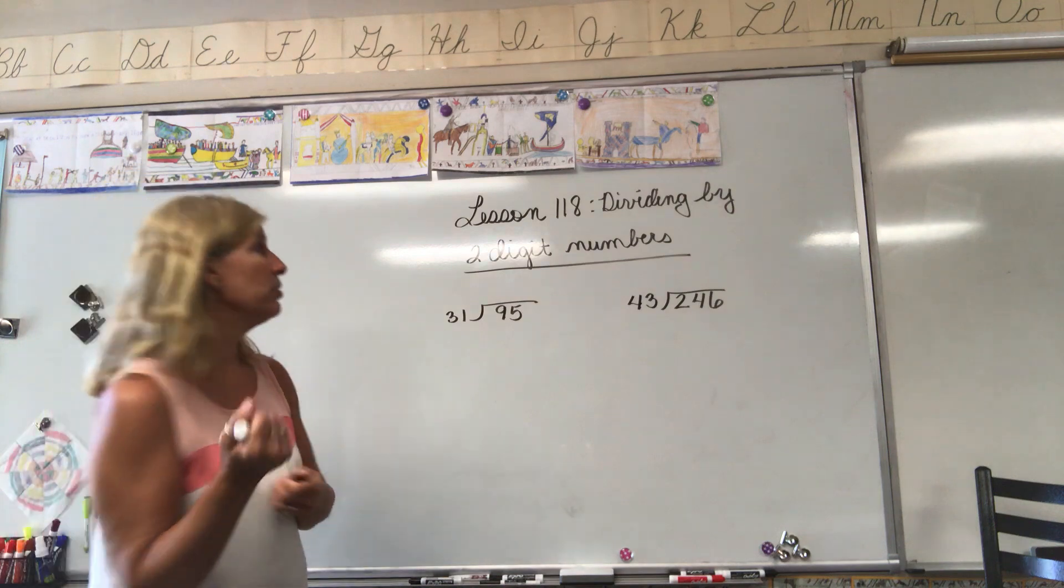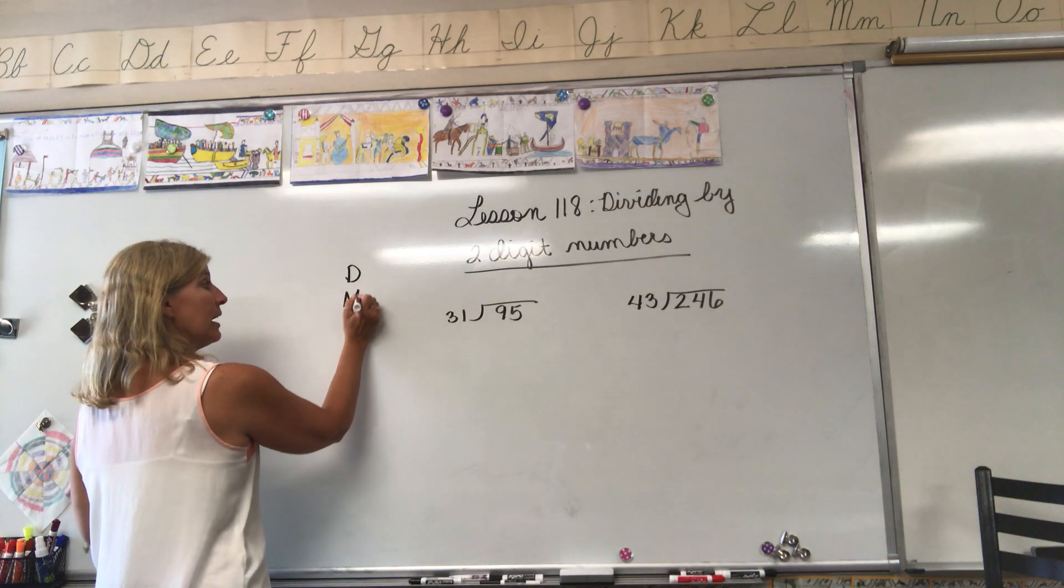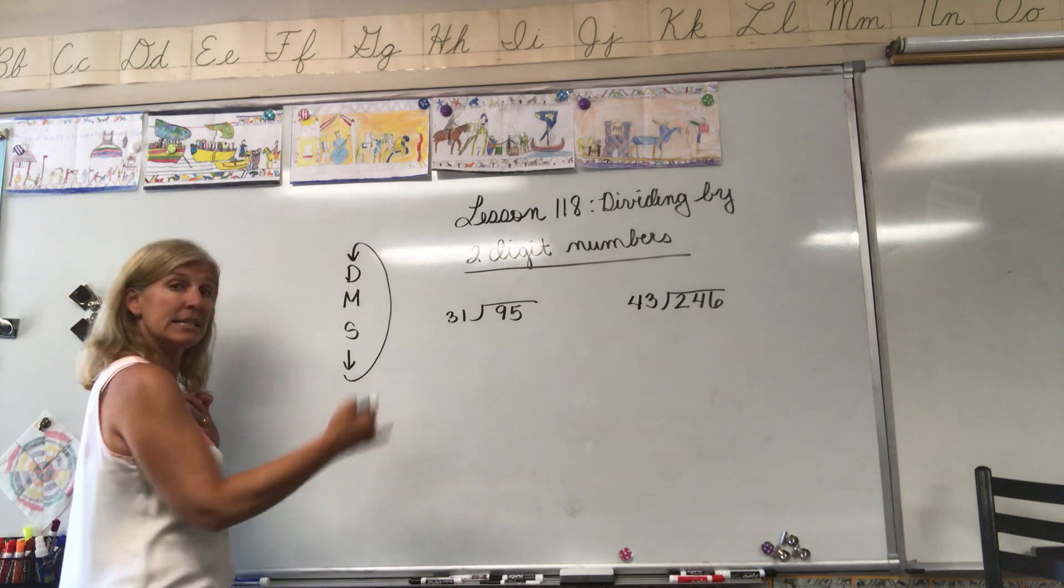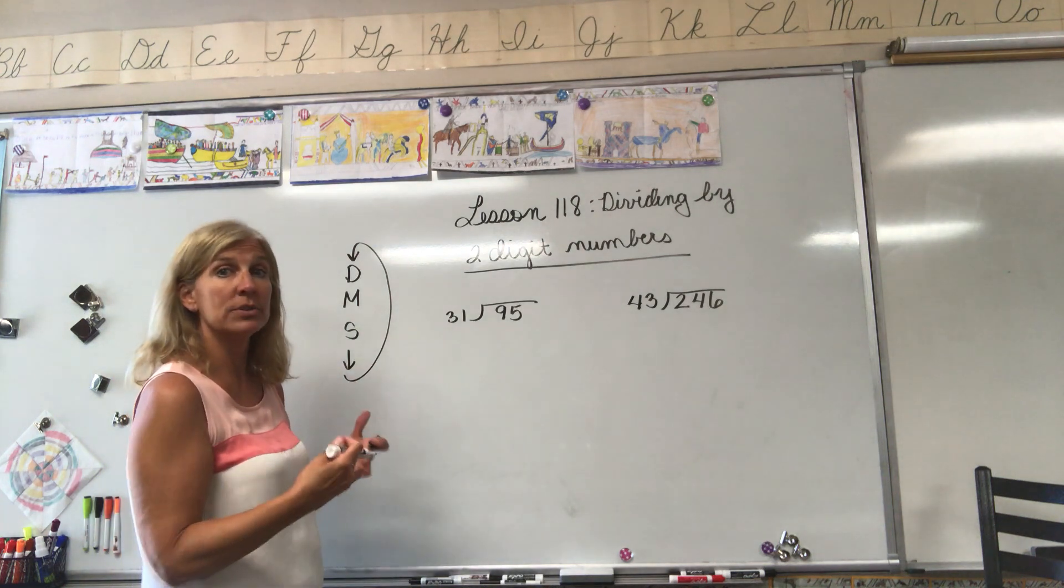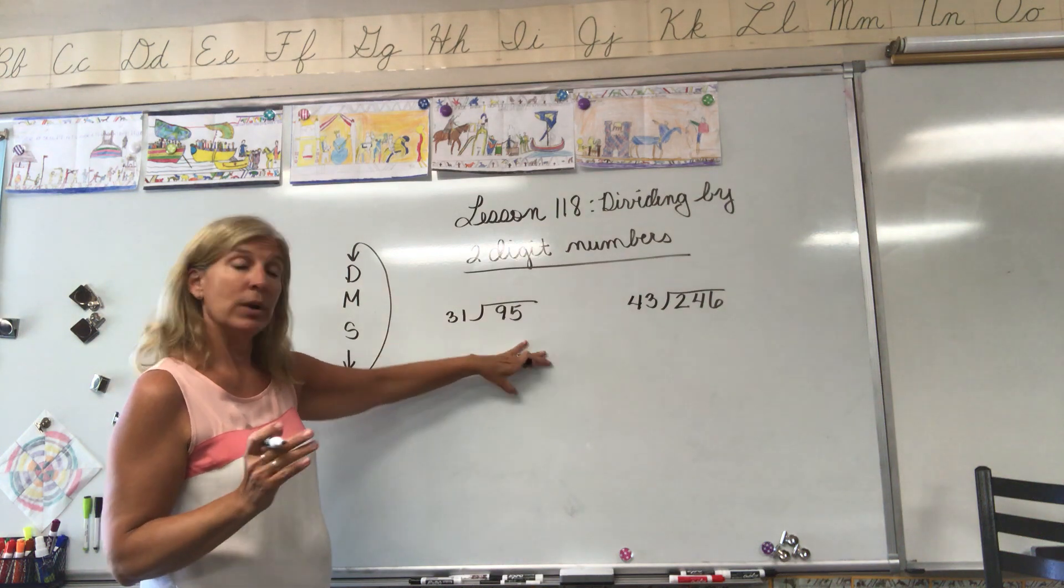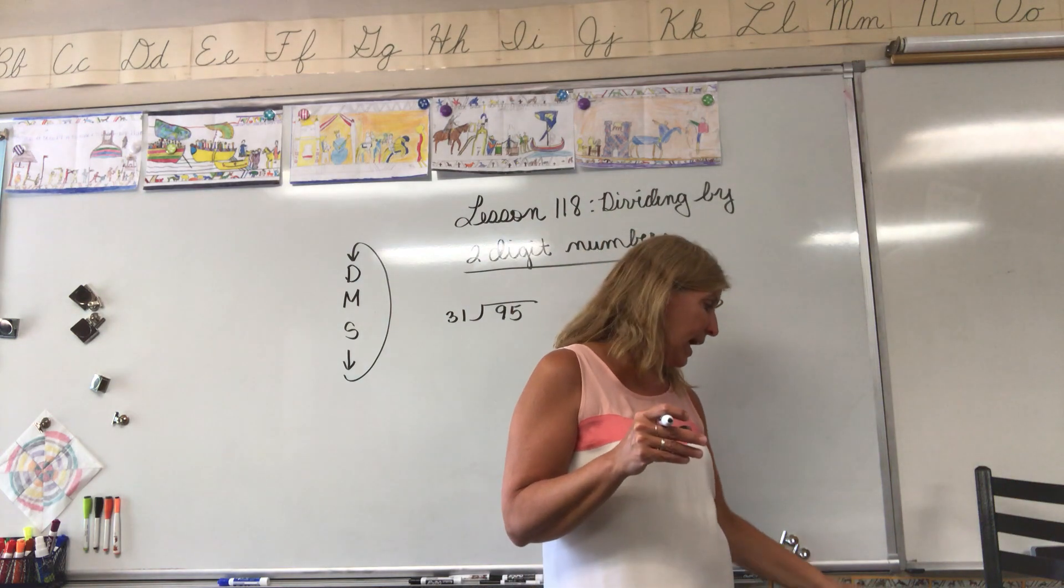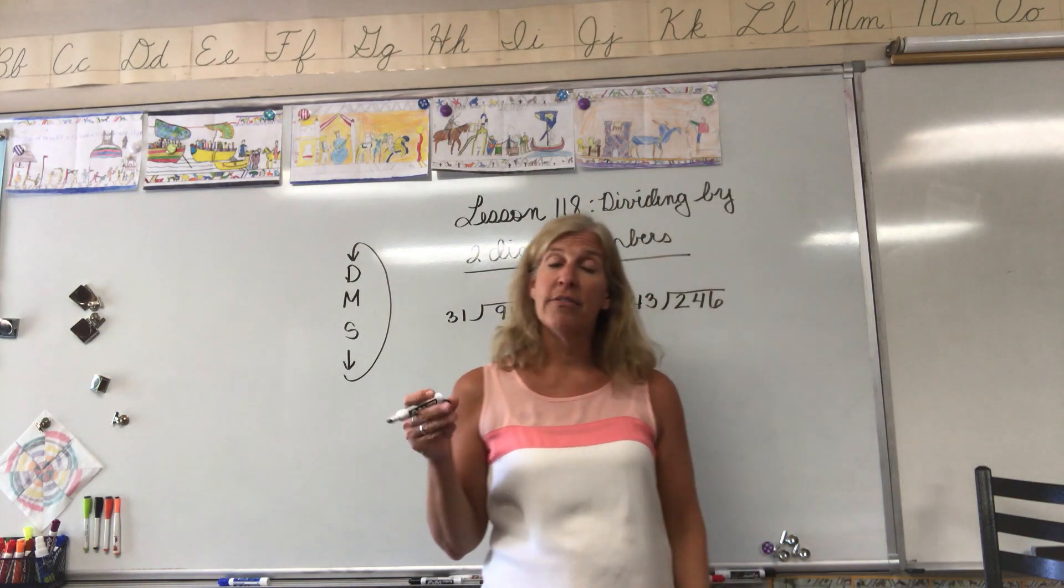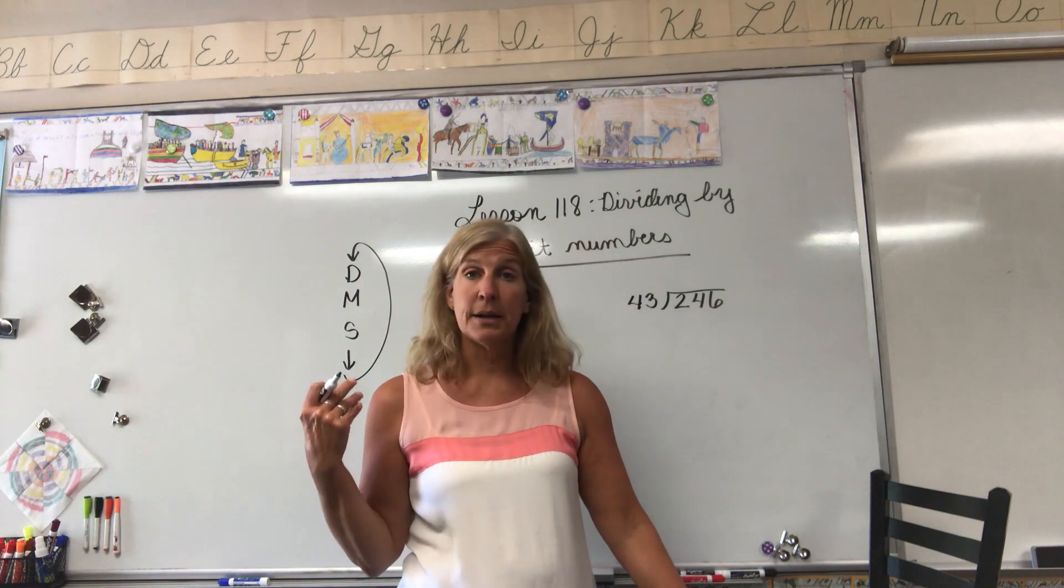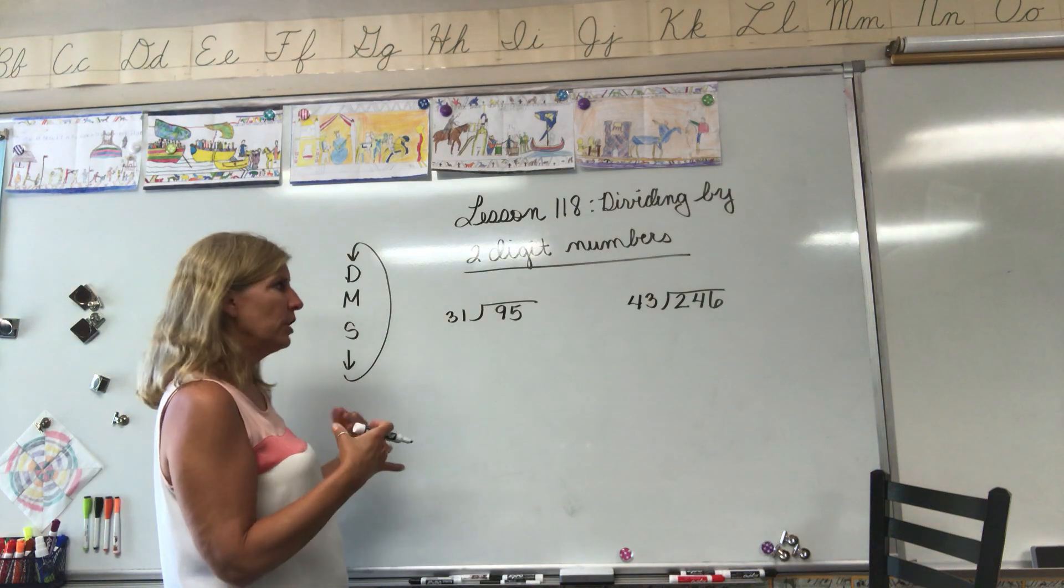Let's review first of all. When we divide, when we have long division, we divide, we multiply, we subtract, we bring down, and then we bring it back to the top and we continue that process until we have nothing else to bring down. I'm going to do these on the board. They are also in your math book, we are in lesson 118 and you are going to begin on page 545 and then continue on 546.